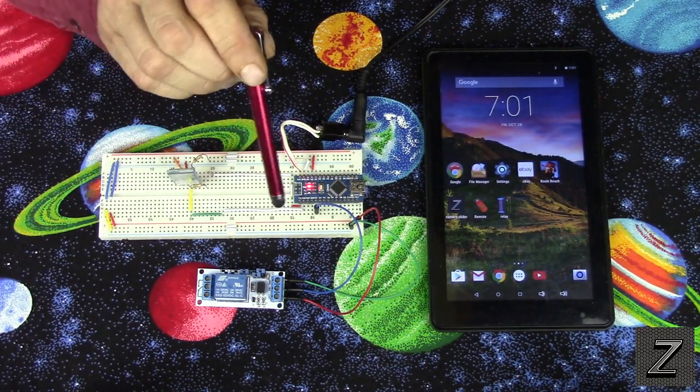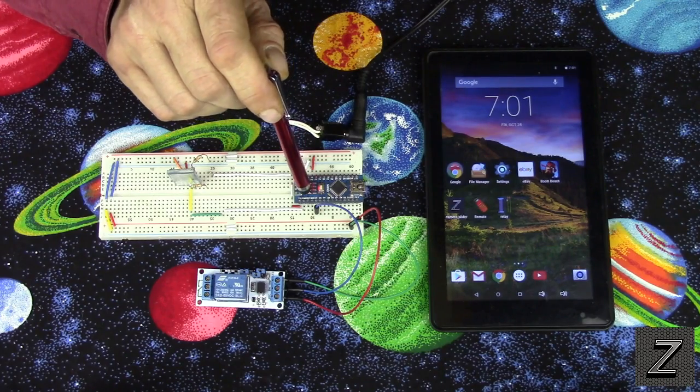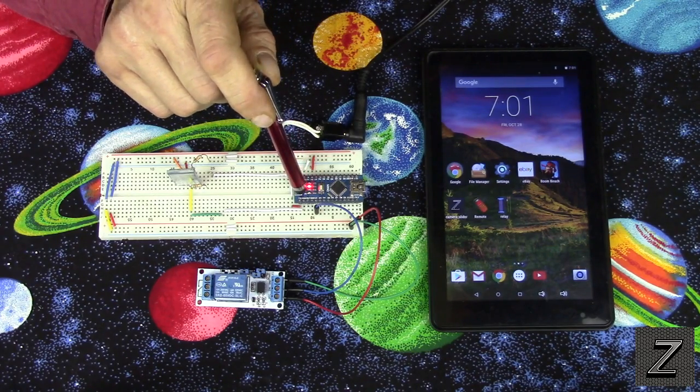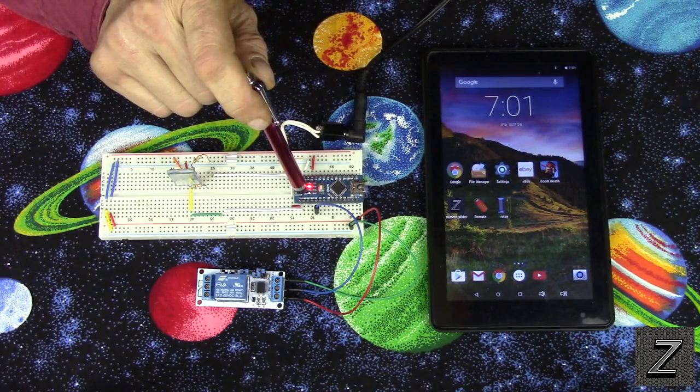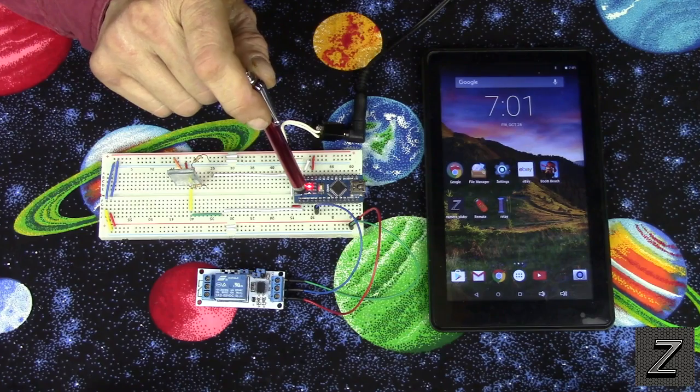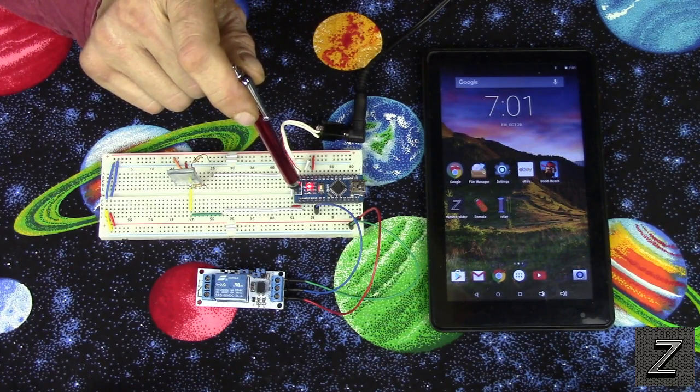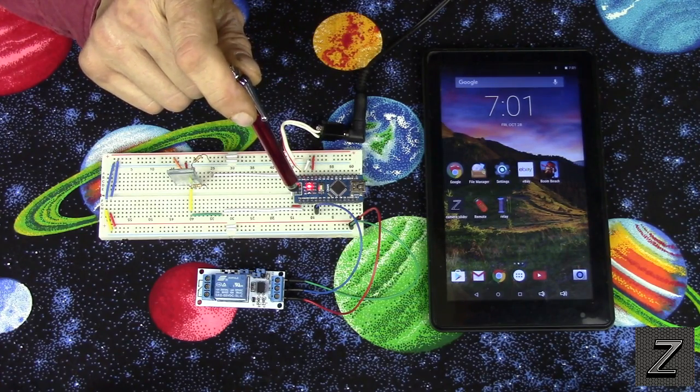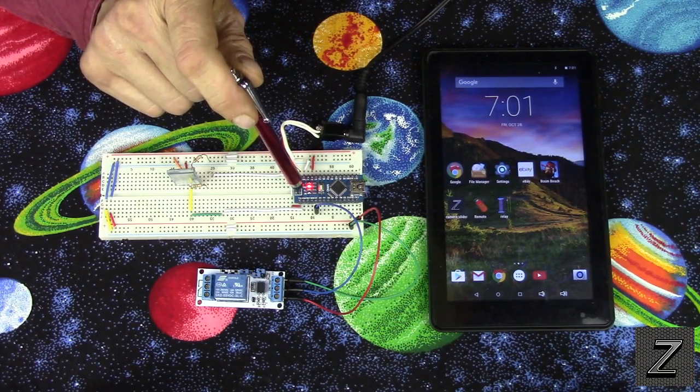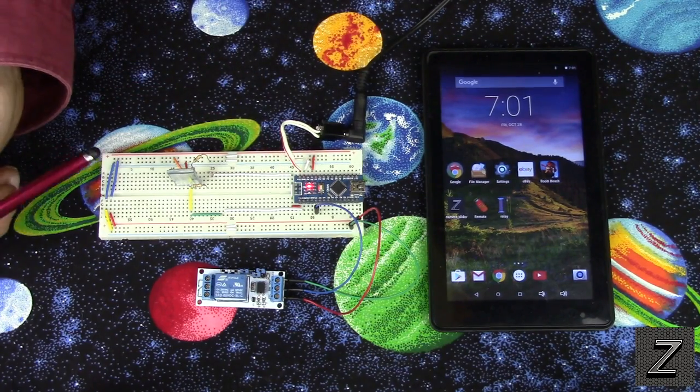Basically all we have is an Arduino board and I'm using a Nano. Now you can use an Uno or any of the other ones. The lily pad probably wouldn't work with this. There's not enough digital pins on it. But most of your other Arduino boards will work.